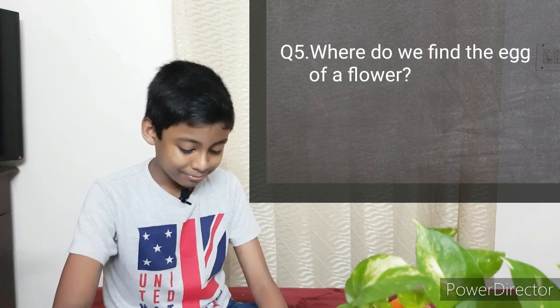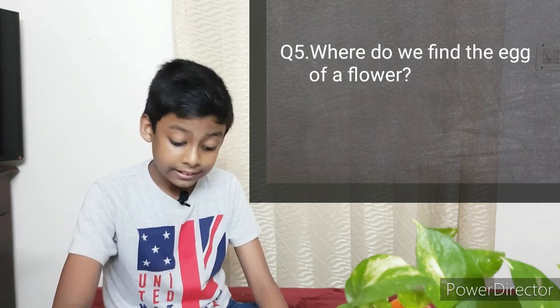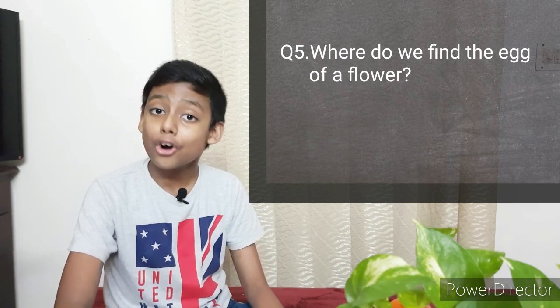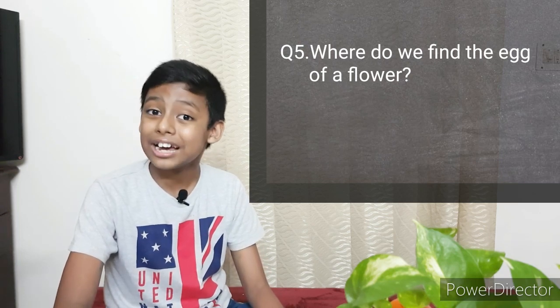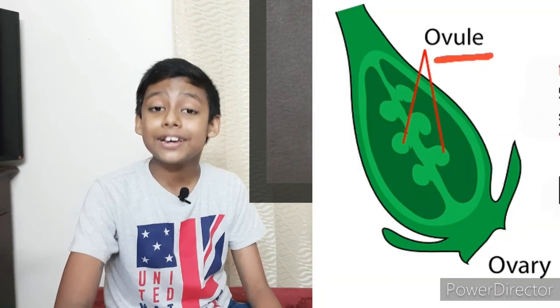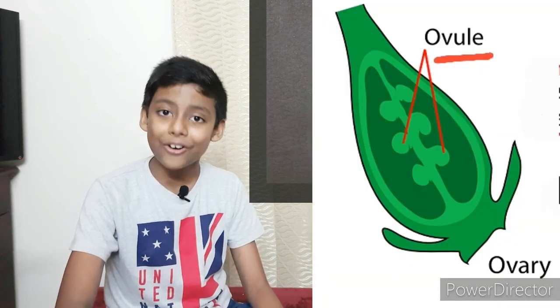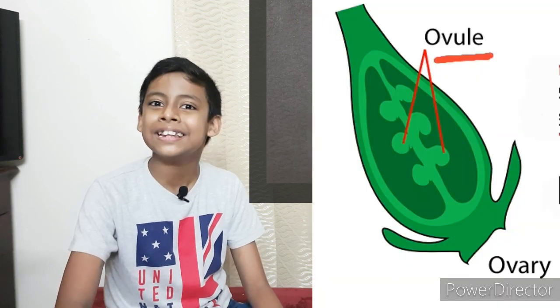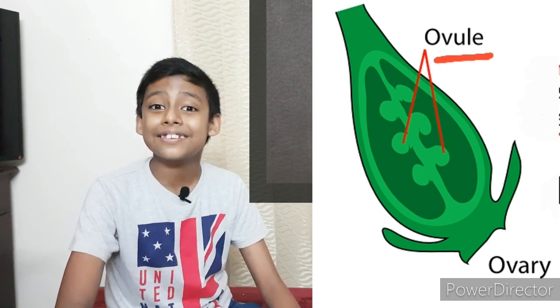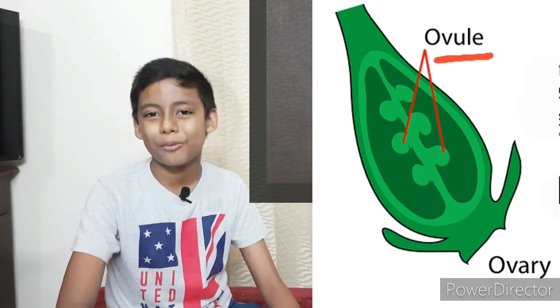The fifth question is: Where do we find the egg of a flower? We have no options available for this question. The answer is: We can find the egg of a flower within the ovule, and these ovules exist within the ovary.